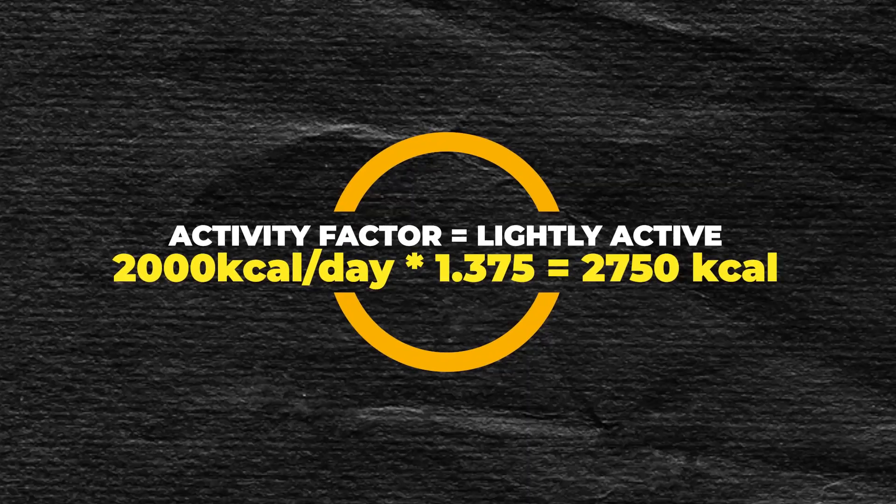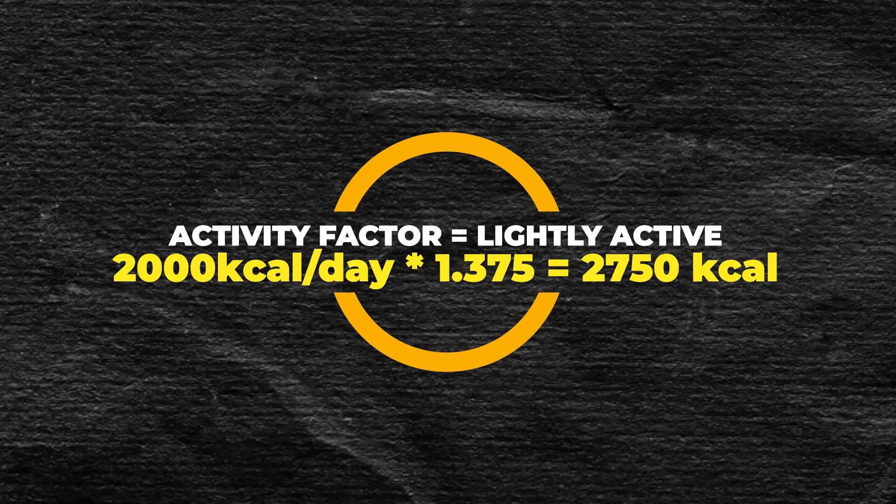Using myself as an example again, if I decided that I was lightly active, I would multiply my estimated BMR of 2,000 by 1.375, which equates to 2,750 calories. This is simply an estimation of how many calories I need to eat in a given day to maintain my weight given my current level of physical activity. If you think your physical activity falls between two activity factors, just pick the value in between — for example, between 1.375 and 1.55 if you fall between lightly active and moderately active.